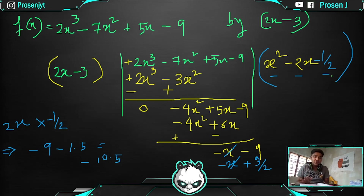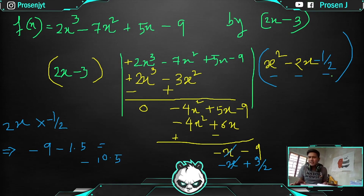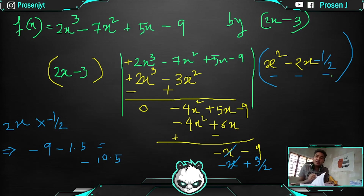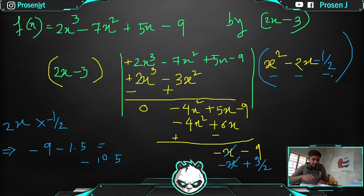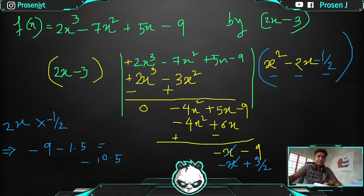I hope you got the idea about the division method. Let's do one more so the division method becomes strong. After that, in subsequent videos I will cover the theory step by step. But today we are just concentrating on this division method where we need to find the quotient and the remainders.